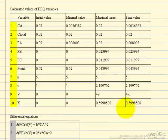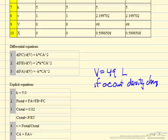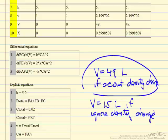The Polymath output shows a conversion of 0.5998 — essentially 0.6 to two significant figures — at a volume of 49 liters when we account for the density change. Comparing the two cases: volume equals 49 liters with density change accounted for (the correct value), versus volume equals 15 liters if we ignore density change. This is a rather dramatic difference — more than a factor of 3 in volume — showing that for a second order reaction with significant mole change, ignoring density change in a gas phase reaction leads to a very large error.